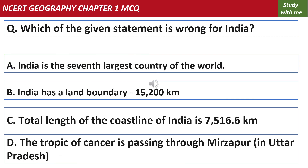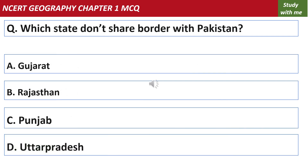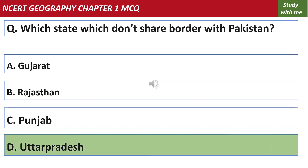Which of the following given statements is wrong for India? The answer is D. All the other options are correct. Option A states that Uttar Pradesh does not share a border with Pakistan — this is the correct answer. Uttar Pradesh does not share a border with Pakistan.